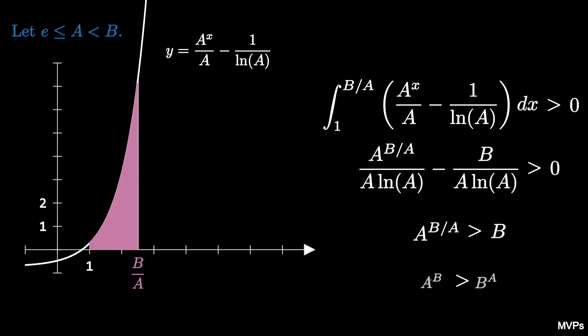Raising both sides to the power of a shows that a to the b is greater than b to the a. So a to the b is greater than b to the a when e is less than or equal to a is less than b.